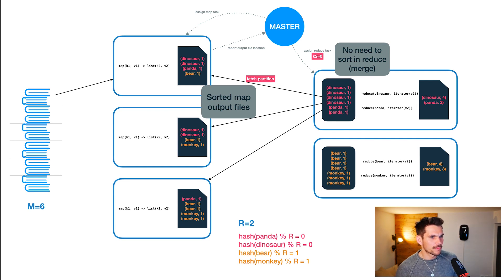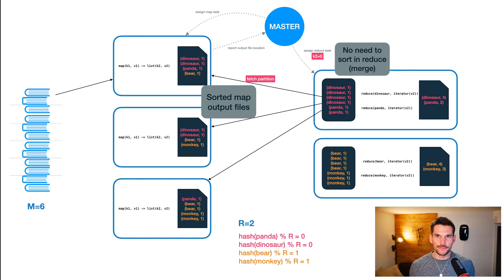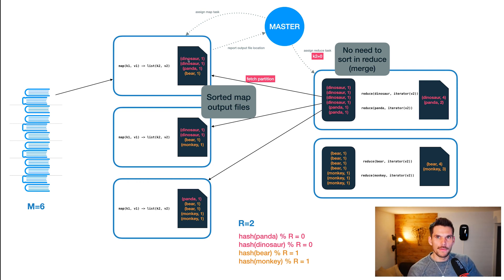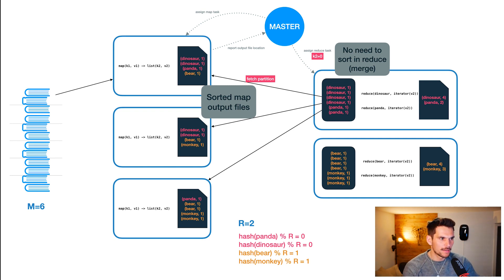Looking at Spark now, there is a slight difference worth mentioning. The overall workflow is quite the same even though things are called differently and it works a little differently in the code, but the idea is the same. However, when we execute a stage — which is basically the map in MapReduce — it also writes an output file to disk. In Spark the difference is that the map output file will already be sorted: it will not be sorted by the reducer but by the map tasks when writing the records.